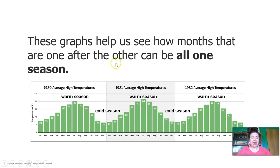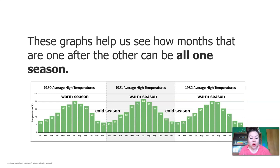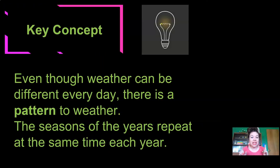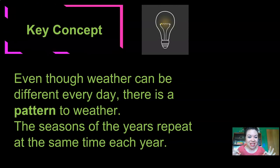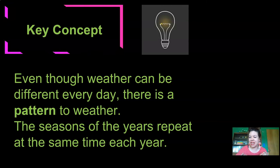Starting in January it's cold, then we have a warm season, then a cold season — that's a repeating pattern that happens over and over again. So even though weather can be different every day, there is a pattern to weather. The seasons of the year repeat at the same time each year. We wouldn't expect to suddenly get cold, snowy weather in the middle of the warm season, or suddenly have hot weather in the middle of the cold season. Weather can change every day a little bit, but generally we can expect it to follow the same pattern.